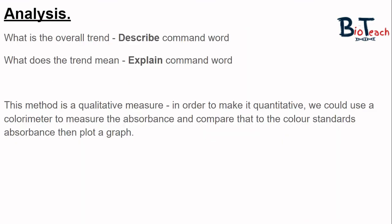Finally, in your lab books you will be asked to analyse your results. First, look at the overall trend — this is the describe part of the analysis where you say what you see. Next, explain what the trend means: why does the result occur as it has? You would see the darkest pigment colour at higher concentrations of alcohol. In this section, make reference to the fluid mosaic model of the membrane and how the alcohol will disrupt or damage the lipid bilayer, therefore allowing the pigment to leave the cell. Essentially, the higher the concentration of alcohol, the more damage is caused to the cell membrane.